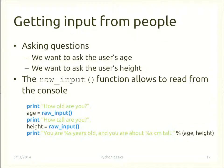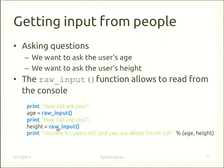The next topic is getting input from users. We use the raw_input function, which reads from the console. For example: print 'how old are you?', then age_raw = raw_input() waits for the user's input and stores the result in the age variable. Similarly, height is captured with raw_input. Finally, we print 'you are %s years old and you are about %s centimeter tall'.